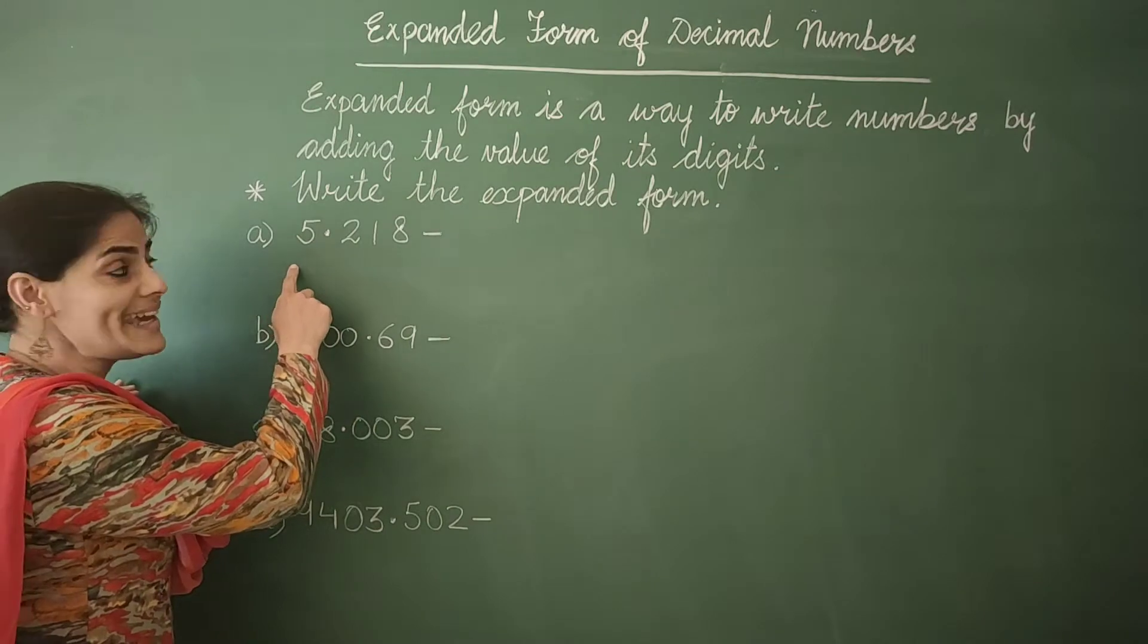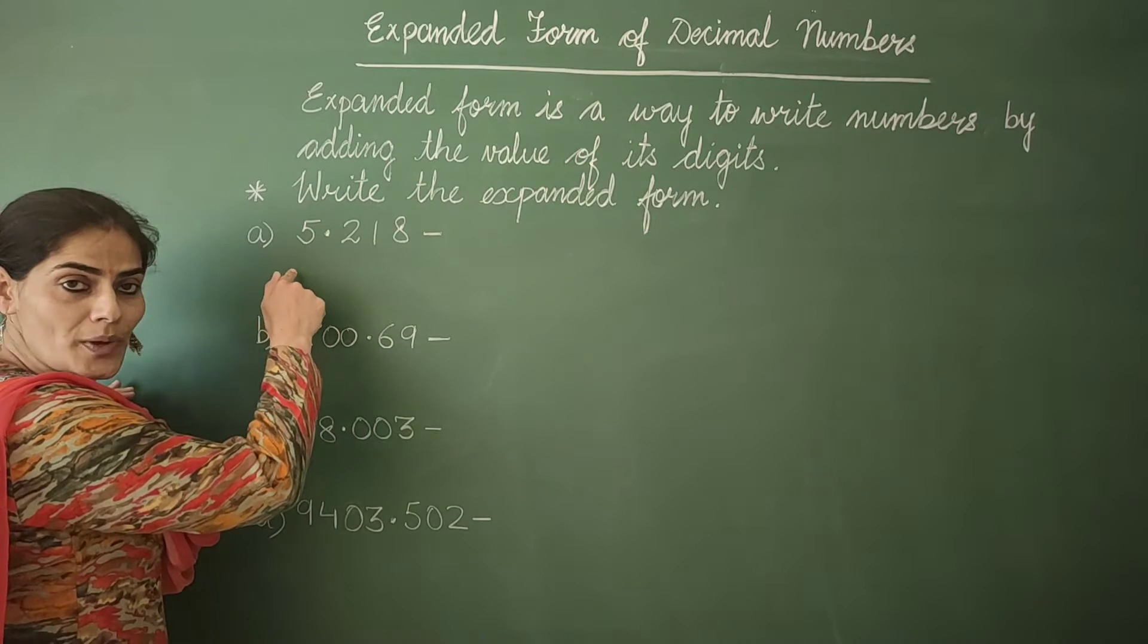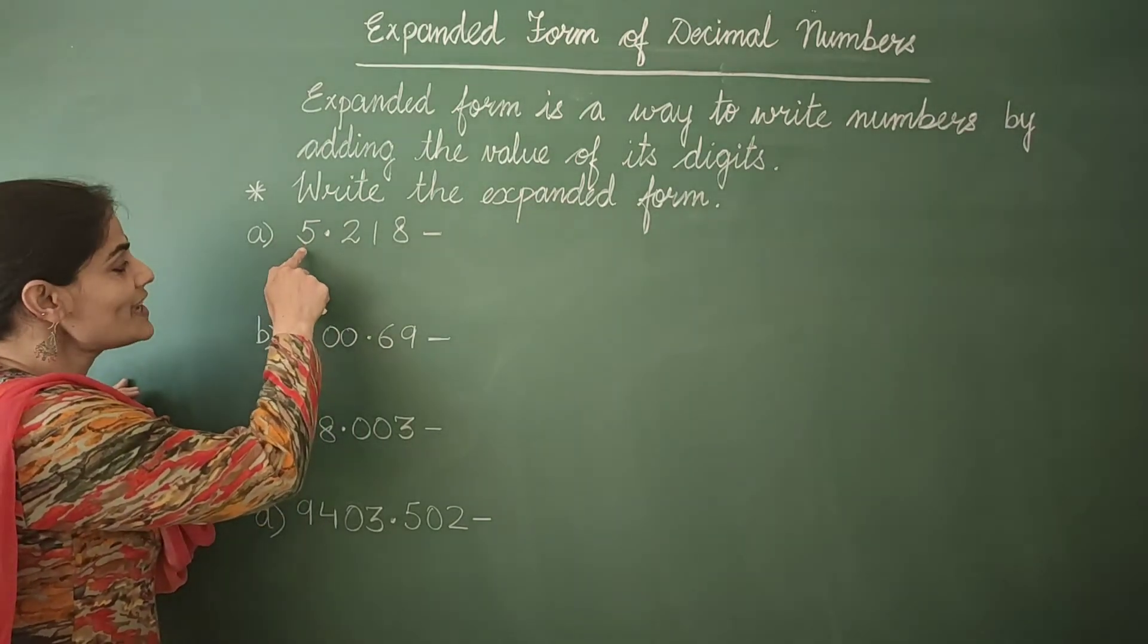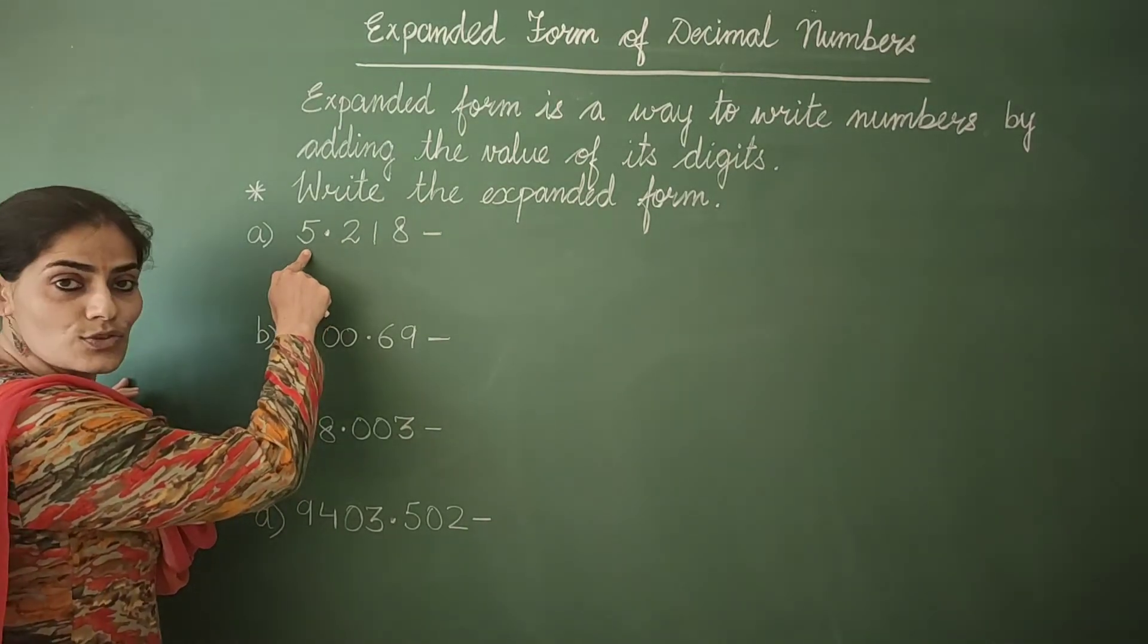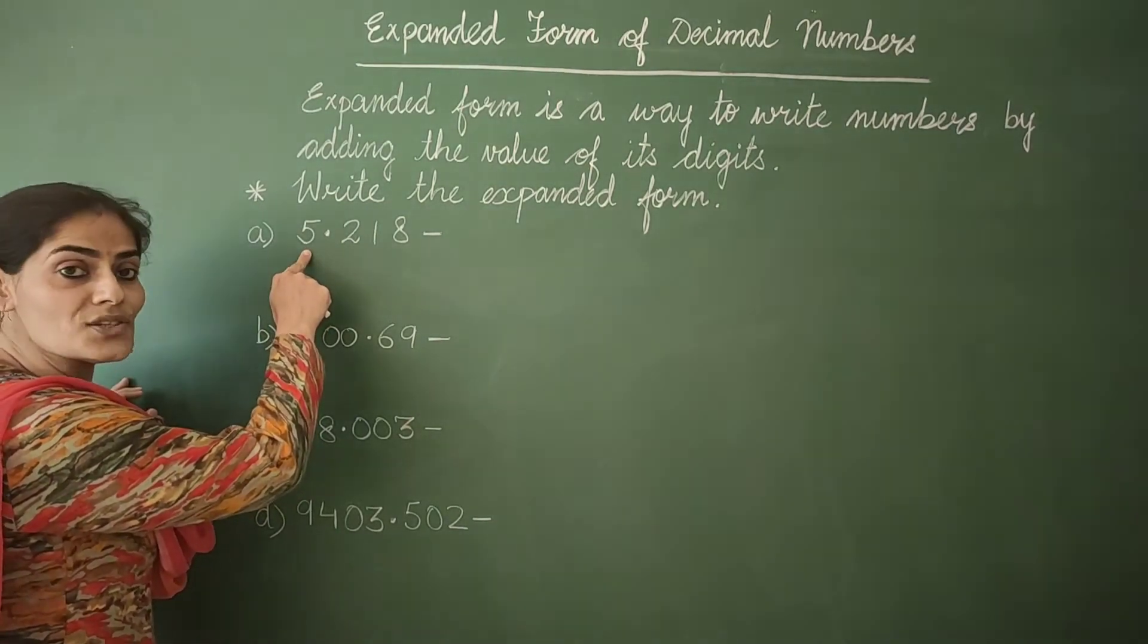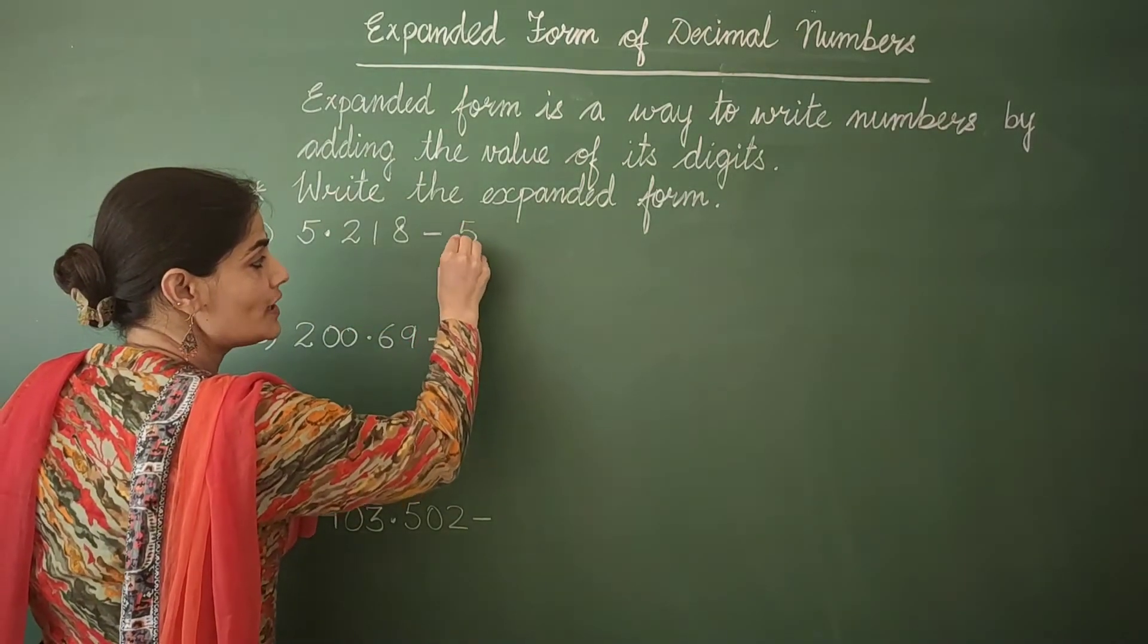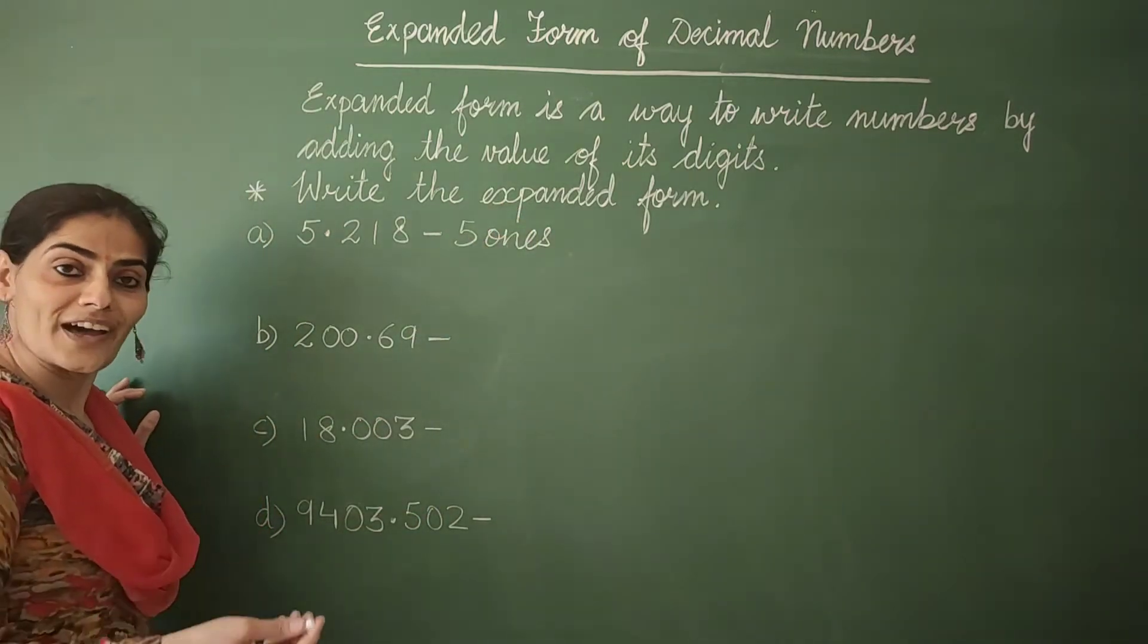Part A is 5.218. We start with the extreme left of this number. So this digit is in whole number part and it is 5. 5 is at which place children? It is at ones place. So we write the place value of 5 as 5 ones.